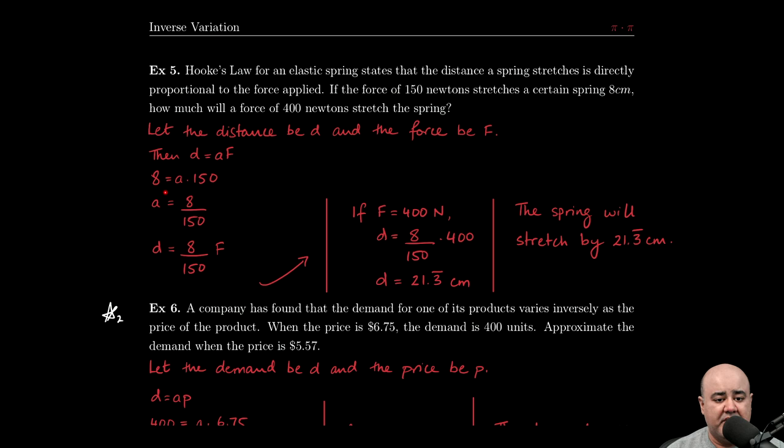Eight centimeters is caused by 150 newtons of force, so if we want to solve for a, we just divide the 150 over to the other side, and that gives us a equals 8 over 150. Once we've found our constant of variation, we can write down our model. The model is simply the equation with the constant plugged in, so the model is d equals 8 over 150 times F.